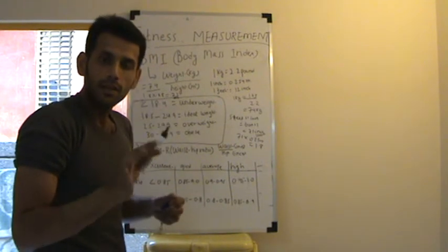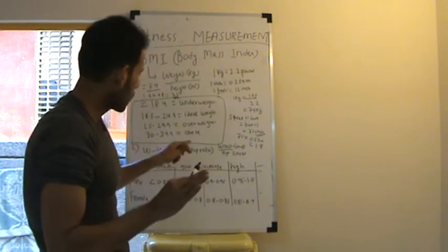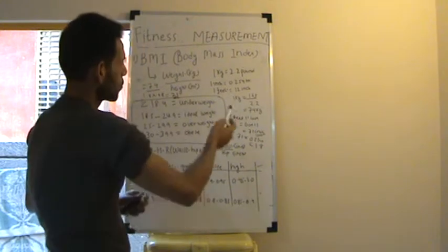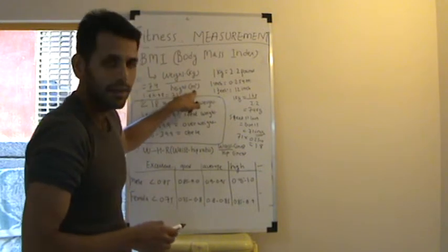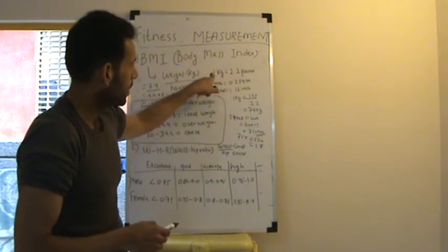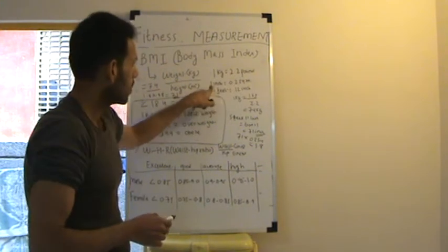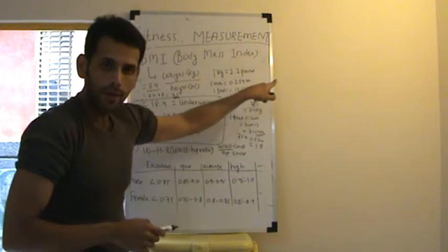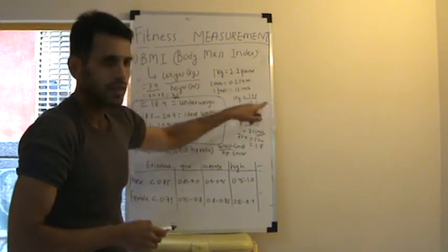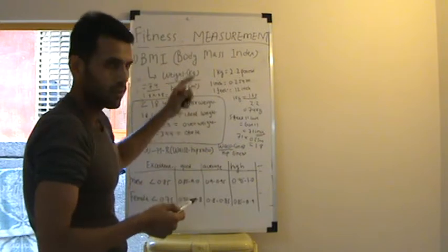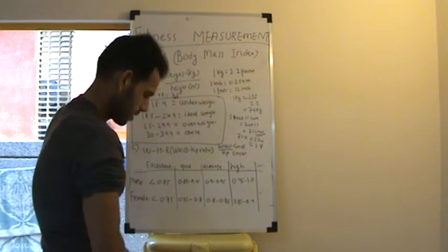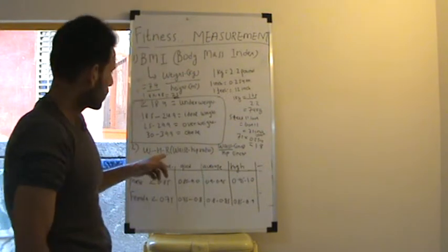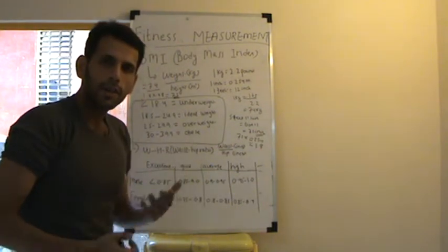A BMI of 25 to 29.9 falls in the overweight range, and if you have a BMI of more than 30, you are falling in the obese weight range. So again, weight in kilograms divided by height in meters squared. I have defined here: 1 kg is 2.2 pounds, 1 inch equals 0.254 meters, 1 foot is 12 inches. You can do your calculations.